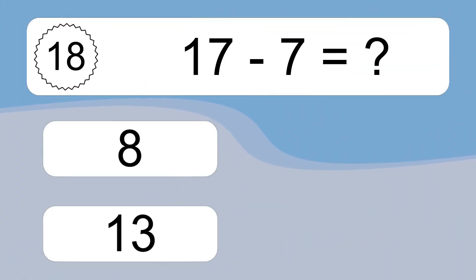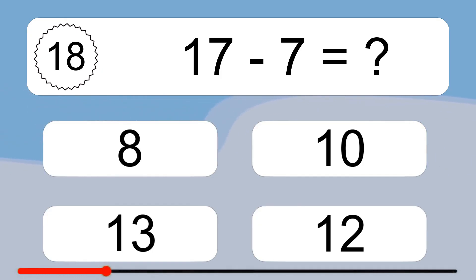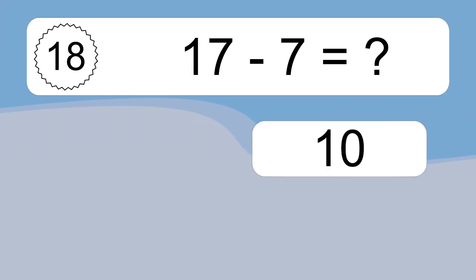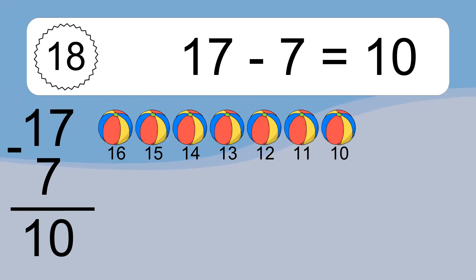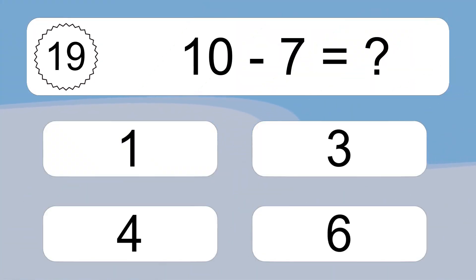17 minus 7 equals what? 17 minus 7 equals 10. Let's count it: 16, 15, 14, 13, 12, 11, 10.